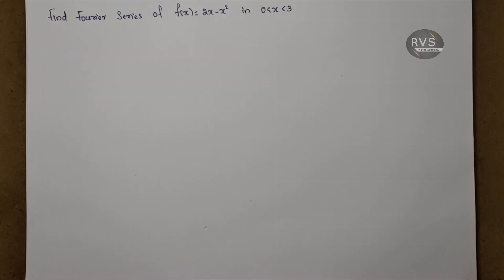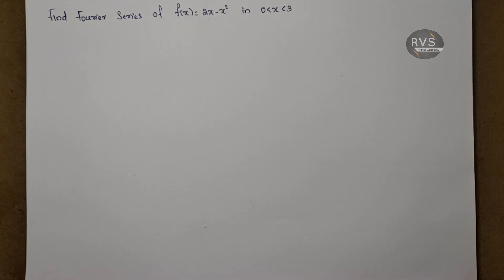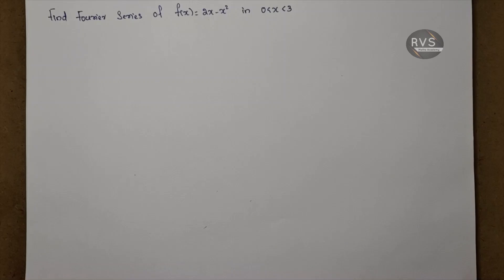How to solve a problem in Fourier series. We have a problem in this video. The interval of the Fourier series has a polynomial function. F of x is equal to 2x minus x squared.